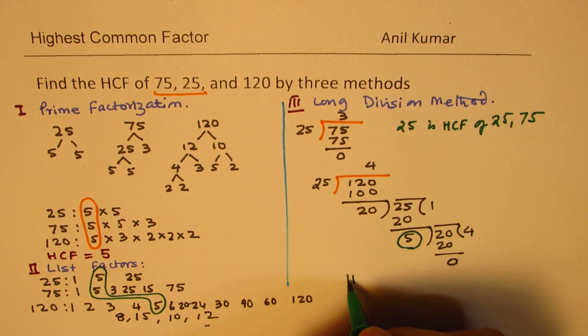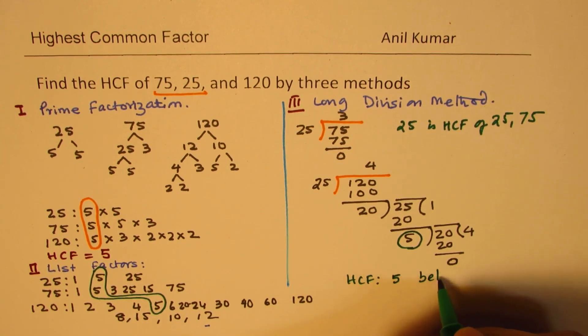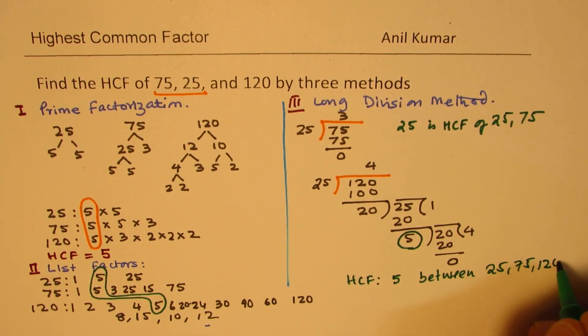So, therefore, we get highest common factor 5 between 25, 75 and 120. Is that clear?